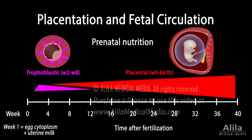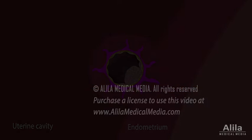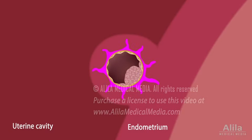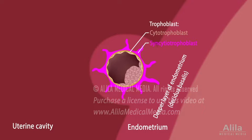The placenta is a hybrid organ containing both maternal and fetal components. It develops from the deeper layer of the endometrium and the trophoblast of the embryo.